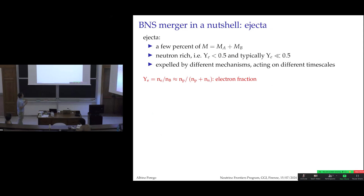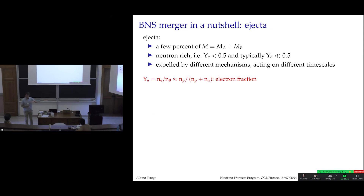The ejecta is a very few percent of the total mass of the system. Since it comes from a neutron star, it starts out very neutron-rich. Neutrinos can change it, but we can say quite safely that the bulk of matter stays relatively neutron-rich. It is therefore the ideal place where r-process nucleosynthesis can take place.